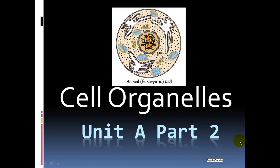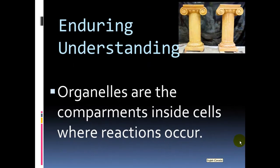This is part two of unit A. In this part we're going to look at the structure and function of organelles that we find within an animal cell, in this case a eukaryotic cell. Let's begin by talking about what is the big picture - what is the enduring understanding for this unit?